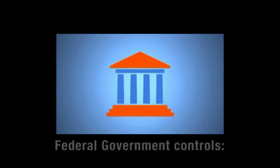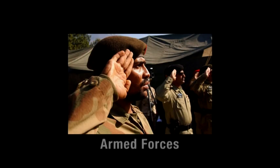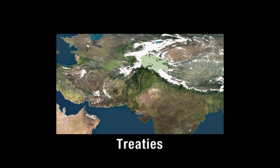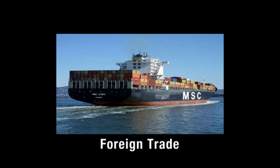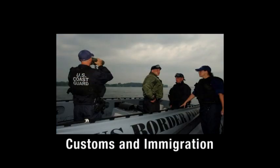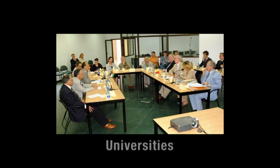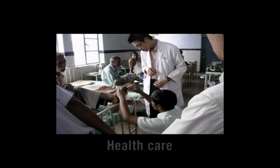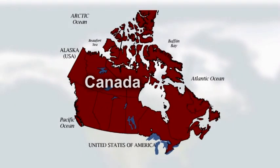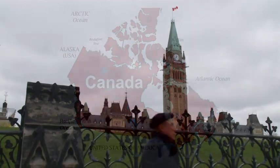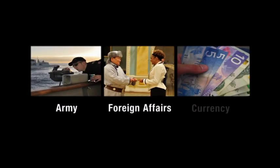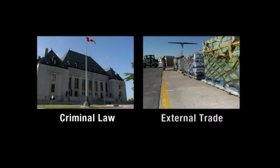Here are some of the areas where the federal or national government usually has control: the currency; the armed forces and defence; treaties with other countries; foreign trade; customs and immigration. In Canada, the constitution clearly states what the federal government is responsible for: the army, foreign affairs, the currency, criminal law, and external trade, for example. The provinces have healthcare, education, and natural resources.